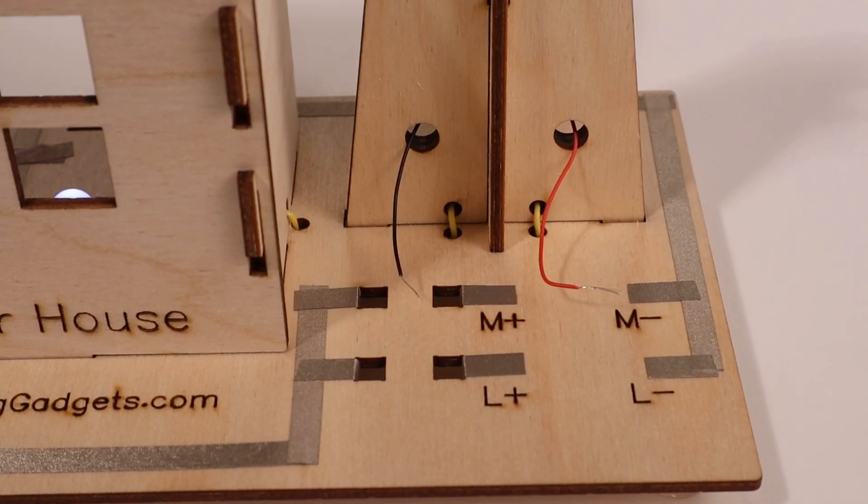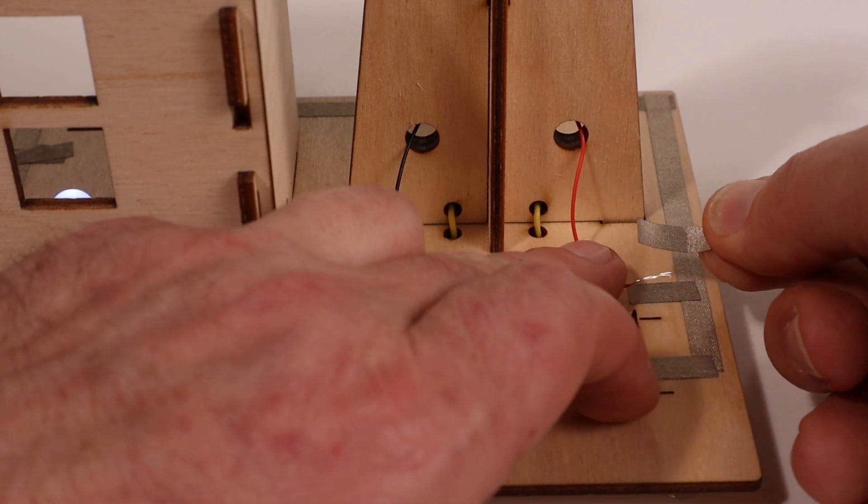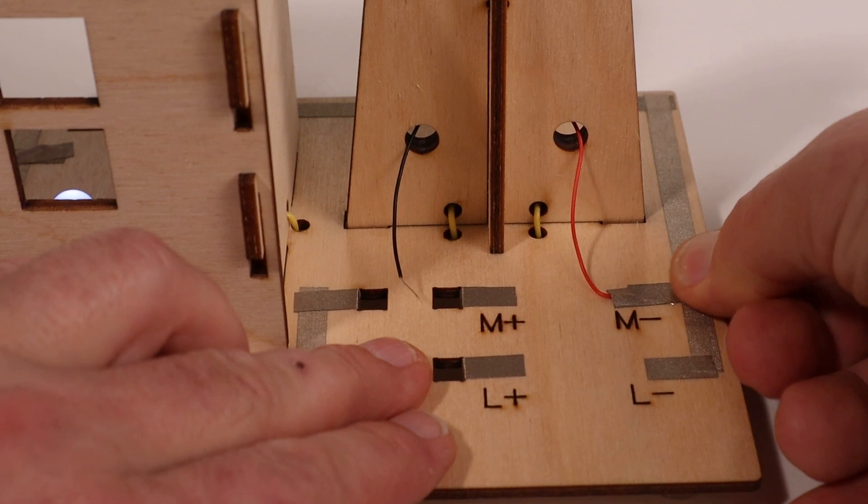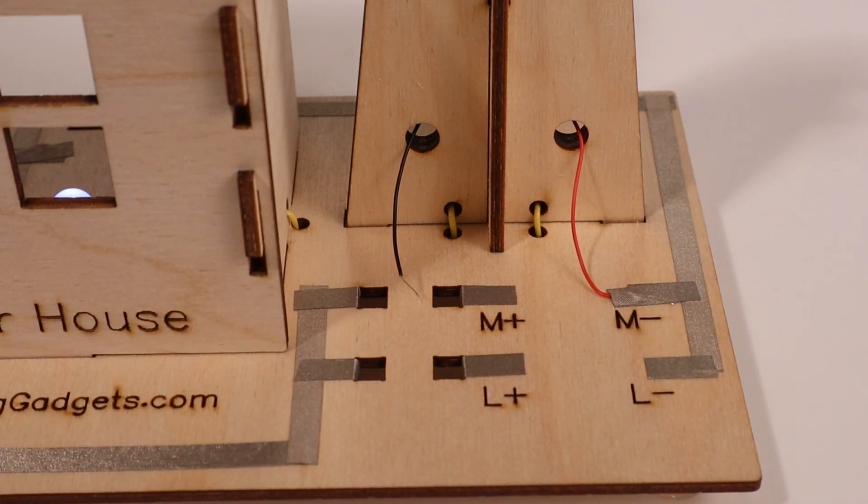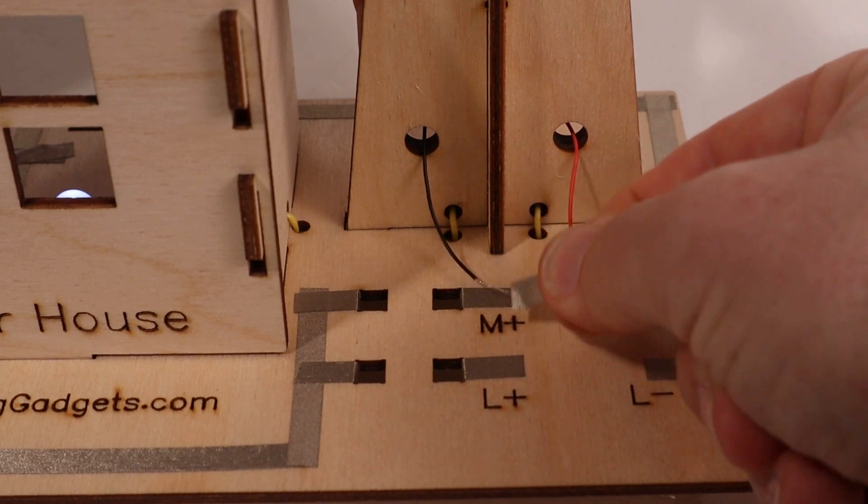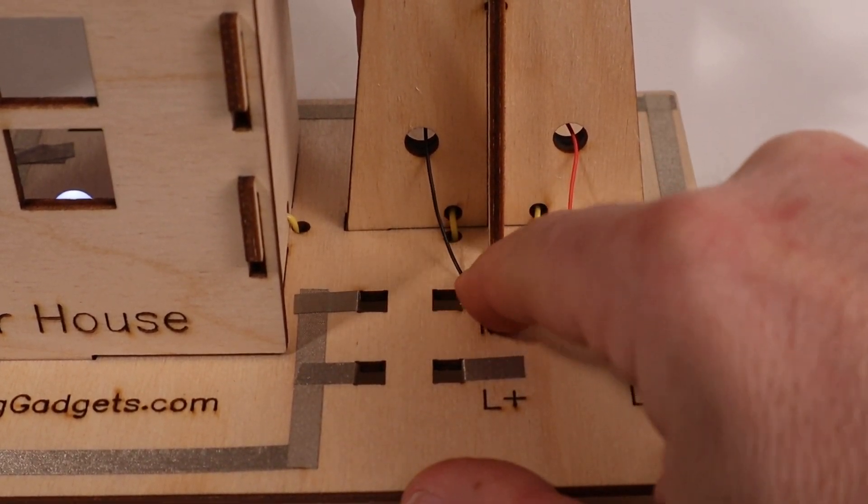Now we'll connect the motor wires to the rest of the circuit. We'll attach the red wire to the M minus connection. What we're doing is connecting the motor reverse of the typical polarity. Do the same with the black wire, connecting it to the M plus connection by adding a small piece of maker tape over the top.